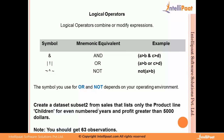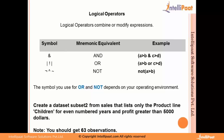The exercise asks us to create a data set called subset2 from the sales data, listing only product line 'Children', for even-numbered years, and with profit greater than $500. You should get 63 observations. Let me go to the SAS environment so that we can perform the same task.